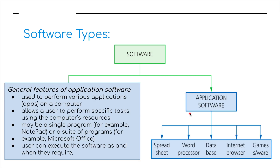On the other hand, application software's general features include: it is used to perform various applications on the computer, it allows users to perform specific tasks using the computer's resources. It may be a single program — for example, Notepad — or it could be a suite of programs, for example Microsoft Office. The user can execute the software as and when they require, basically as they open and close the software.